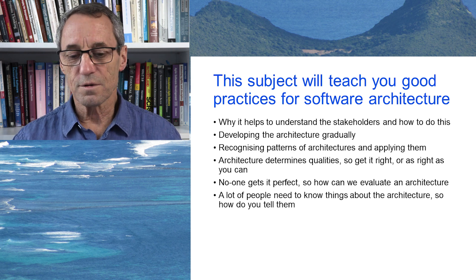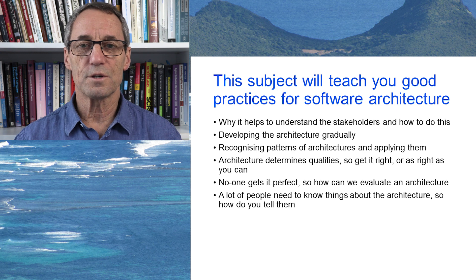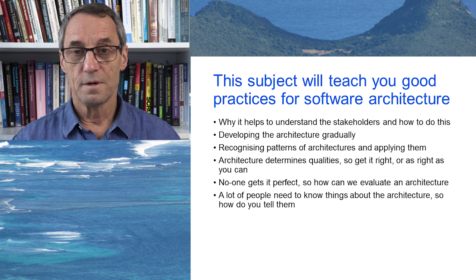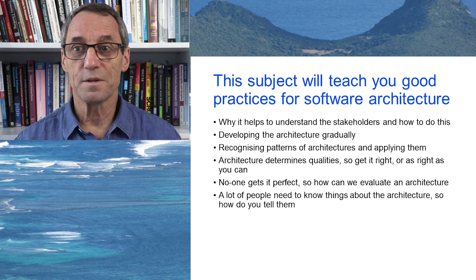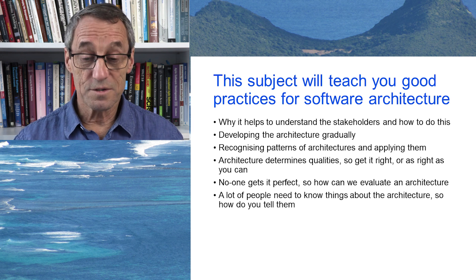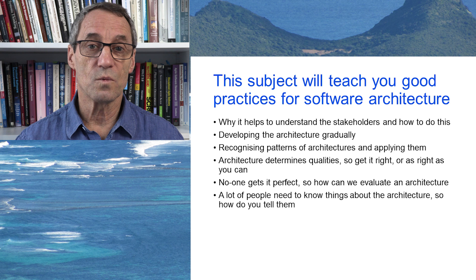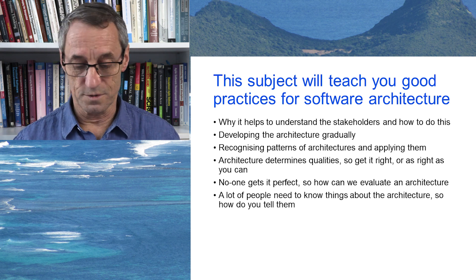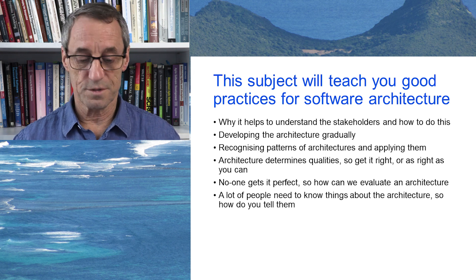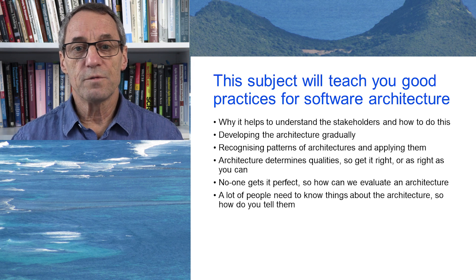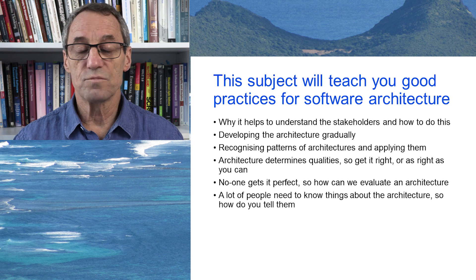Architectures last a long time, so in designing an architecture you can make really big mistakes that become fairly permanent — this has happened in a lot of systems. Either the architecture was ill-conceived, or more likely it was created in one set of circumstances but the circumstances changed and the architecture no longer suits them. Nevertheless, we have to try our best at the time. No one gets it perfect — even the best software architects don't get it perfect.